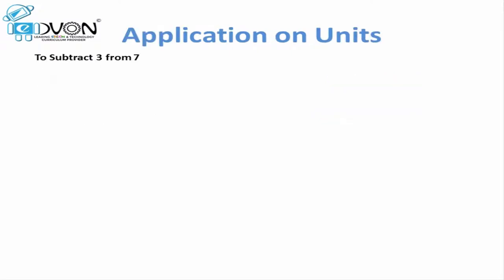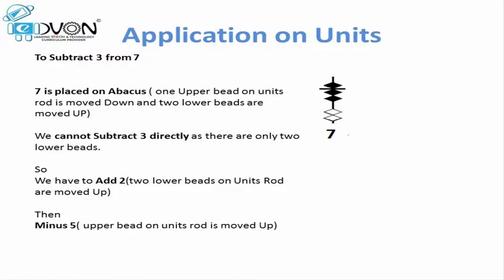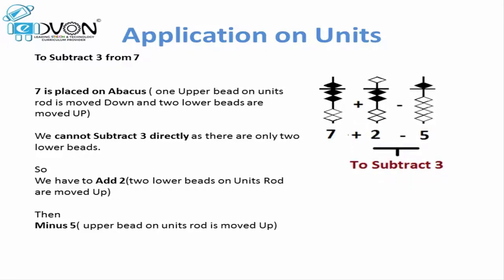Let's learn how to apply minus 3 on units. For example, if we want to subtract 3 from 7, first we will place 7 on the abacus — that means upper bead and 2 lower beads touching the calculation bar. Now to subtract 3, we can see we only have 2 lower beads touching the calculation bar, equal to 2, and the upper bead equals 5, so we cannot directly subtract 3. We apply the formula: minus 3 equals plus 2 minus 5. We move 2 lower beads upward to add 2, and move the upper bead away from the calculation bar to subtract 5. As a result we get 4 lower beads touching the calculation bar, which represents the value 4.